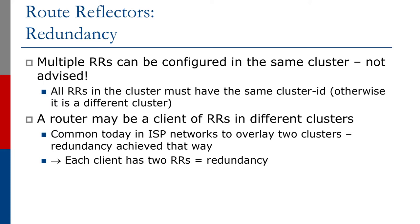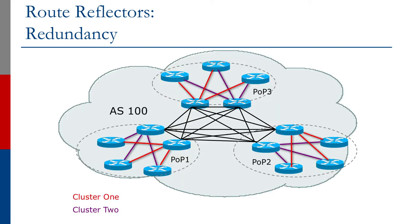Many operators today configure a client as a member of two different clusters. Commonly, route reflectors are set up in a point of presence where one core router is the route reflector for one cluster and another core router is the route reflector for the other cluster. A diagram illustrates this most clearly.